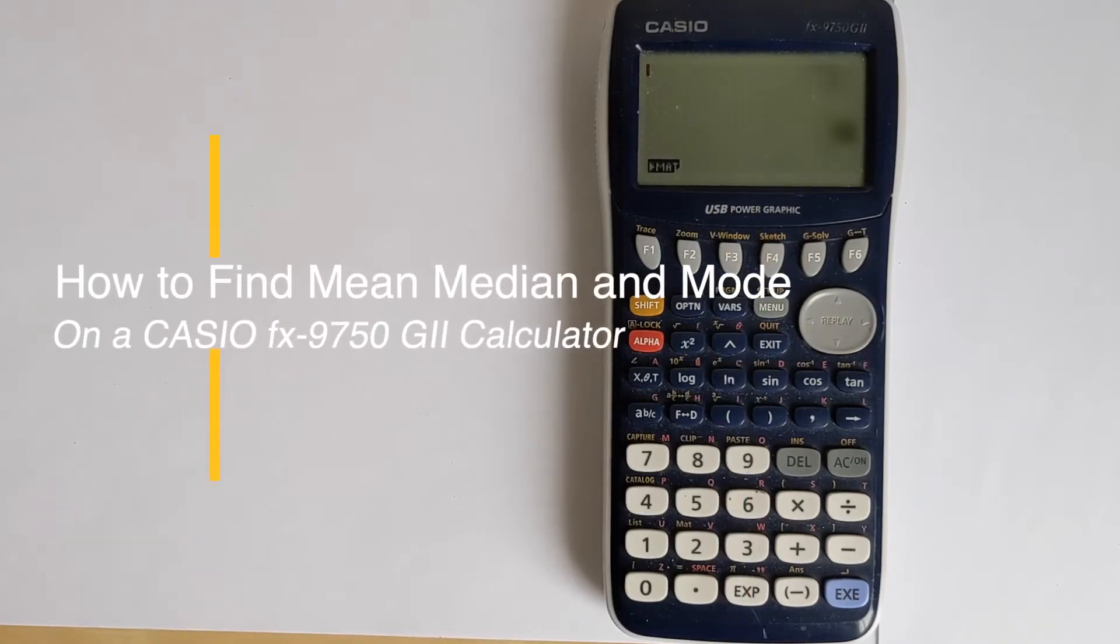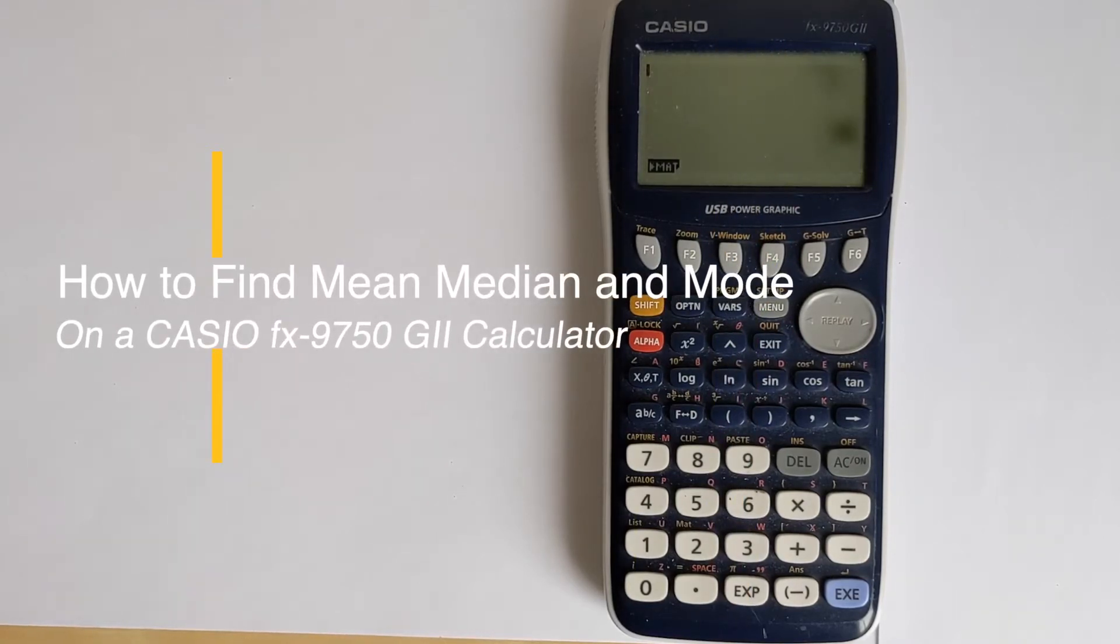In this video, I'm going to show you how you can calculate the mean, median, and mode on a Casio FX-9750-GII graphing calculator.